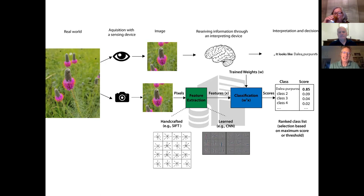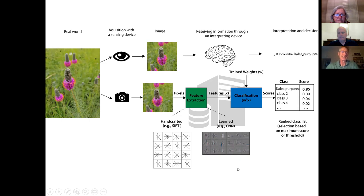Machine learning is a bit of a buzzword, but it's basically having the computer do the identification for you. It's also known as neural networks, and it's really inspired by the structure of the brain — a connected series of neurons all firing, taking in the image from your eye and then trying to interpret it.